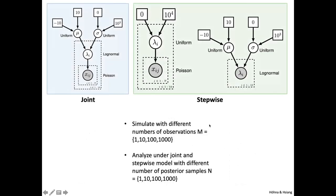We set up these models and performed a bunch of simulations, simulating with a different number of observations or data points associated per lambda — ranging from one to a thousand data points. We analyzed this simulated data under both the joint and the stepwise approach. We also tested — varying the number of posterior samples we're actually taking when we move from step one to step two — how many samples do we actually take to use as data when we run step two.